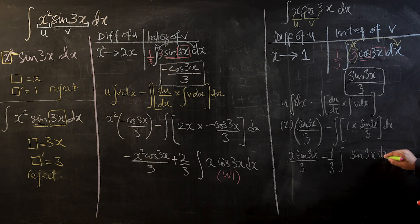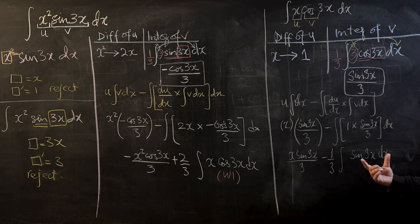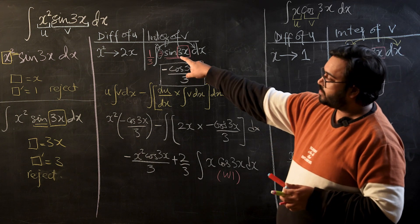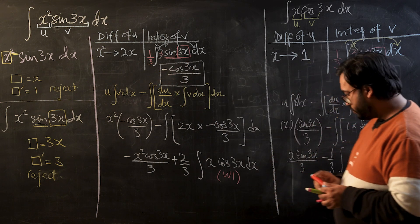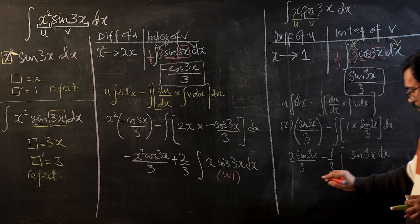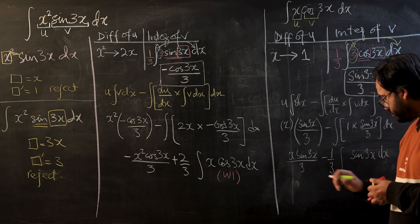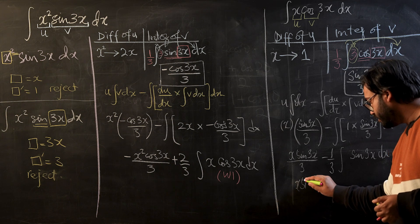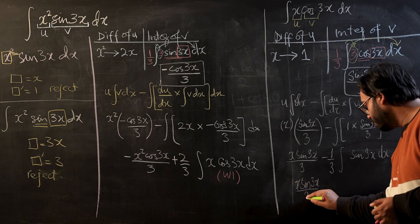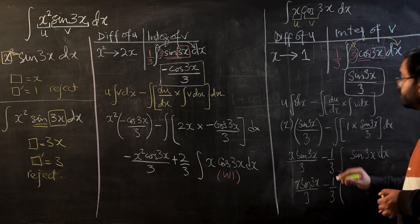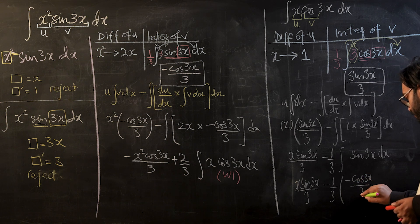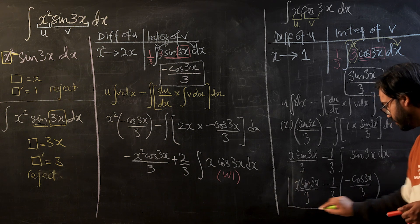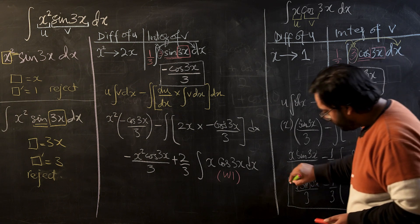This is the last integral left in this term. We already integrated sine(3x) right at the beginning — its integral is negative cos(3x)/3. Substituting that in, the result for this sub-integral is: x·sine(3x)/3 minus (1/3) times negative cos(3x)/3, which simplifies to x·sine(3x)/3 plus cos(3x)/9. This is the solution for the inner term.